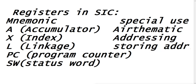There are various registers in SIC, that is the Simplified Instruction Computer. The first register is A — the accumulator register. The second is X — the index register. The third is L — the linkage register. The fourth is PC — the program counter register. And the last one is SW — the status word register. So there are totally five registers available in the SIC computer.